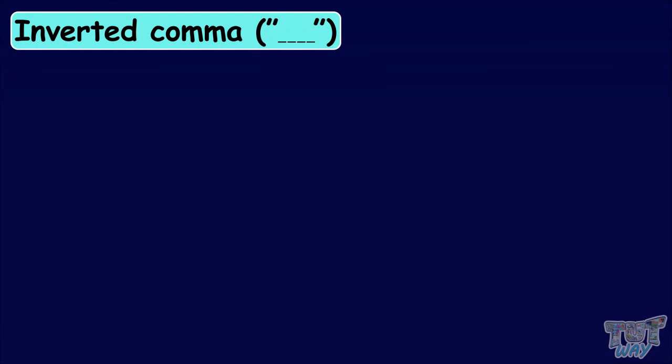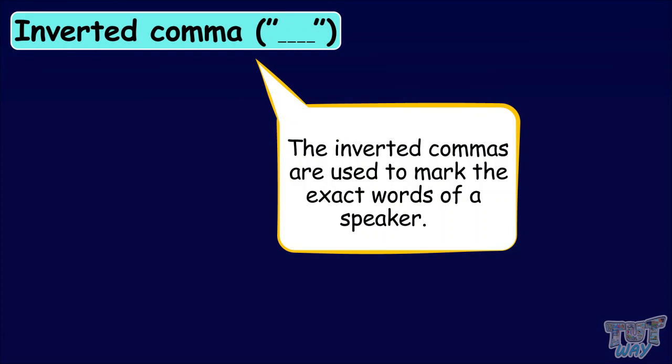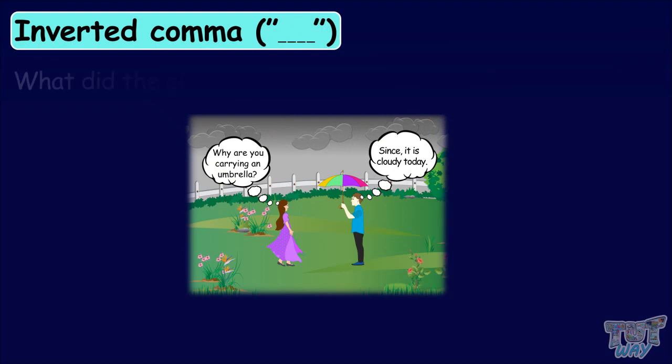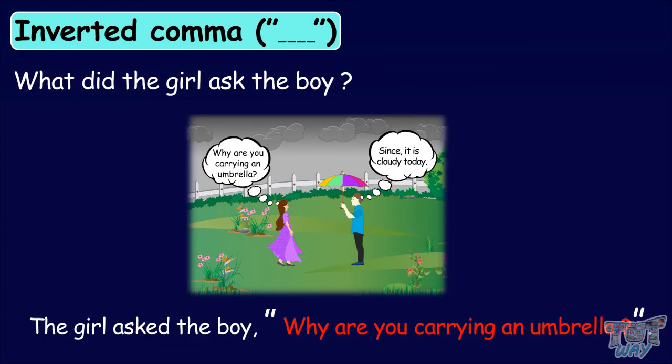Inverted commas are used to mark the exact words of a speaker. Let's see a picture. We see a boy and a girl in a garden. The boy is carrying an umbrella. Since it's cloudy today. What did the girl ask the boy? The girl asked the boy, 'Why are you carrying an umbrella?' These are the exact words spoken by the girl, so we have put these words in inverted commas.